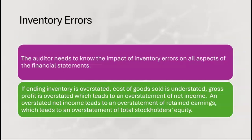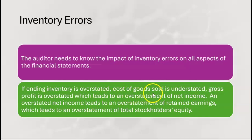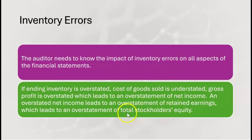The auditor needs to know the impact of inventory errors on all aspects of the financial statements. If ending inventory is overstated, cost of goods sold is understated, which means gross profit is overstated. An overstated gross profit leads to an overstatement of net income, which leads to an overstatement of retained earnings and total stockholders' equity. They love these kinds of questions on audit, FAR, REG, and even the EA enrolled agent exam.